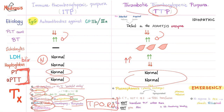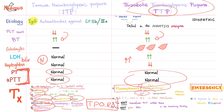Let's manage TTP. TTP is a freaking emergency, so you need to urgently do plasmapheresis — plasma exchange with fresh frozen plasma and cryosupernatant, not cryoprecipitate, because cryoprecipitate actually has von Willebrand factor which will lead to more platelet microthrombi and make matters worse. Do not give platelets.